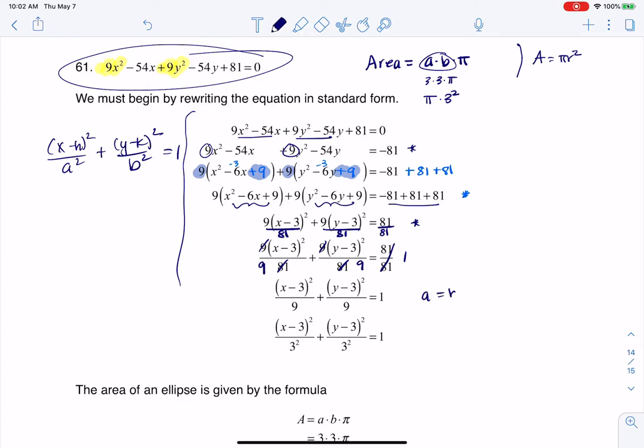So I can see here that A is equal to B is equal to three. And again, when A and B are equal, I just want to emphasize here, you've got a circle.